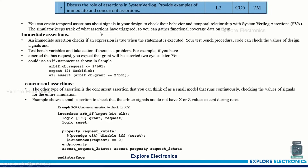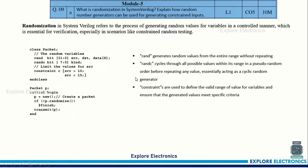Then: discuss the role of assertions in SystemVerilog and provide examples of immediate assertion and concurrent assertion — a very important question that may appear in the exam. How an immediate assertion is executed and how a concurrent assertion is executed is shown in the examples given. Refer to these examples and write the same in your answer.